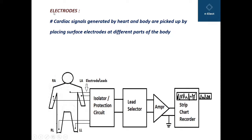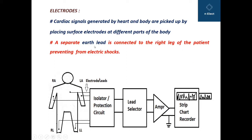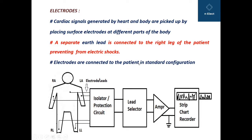We will first speak about electrodes. Cardiac signals generated by the heart and body are picked up by placing surface electrodes at different parts of the body — at the chest, left arm, right arm, right leg, and left leg. A separate earth lead is connected to the right leg of the patient, preventing the patient from electric shocks. Electrodes are connected to the patient in a standard configuration decided by doctors or medical technicians to diagnose the condition of the patient.